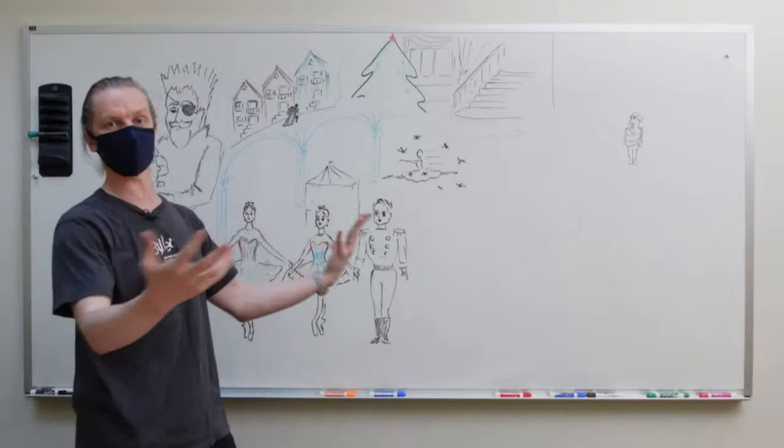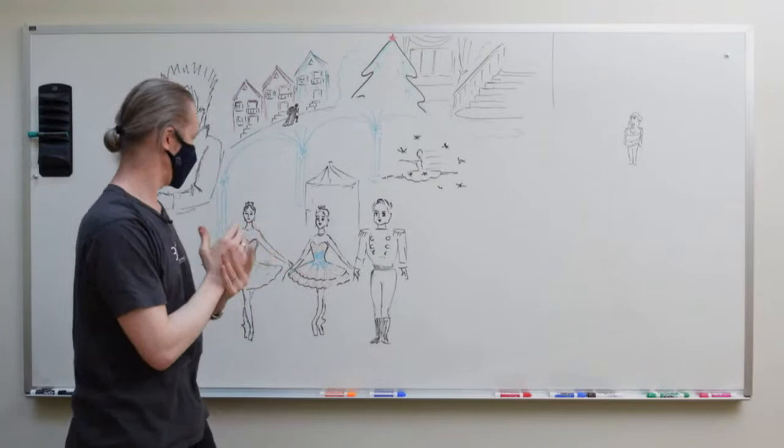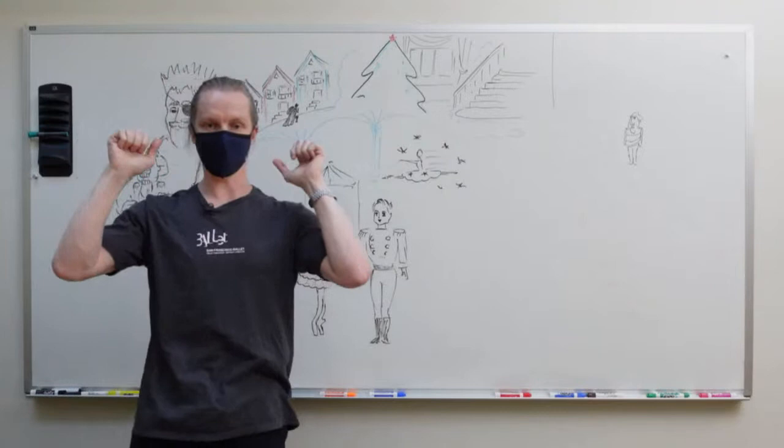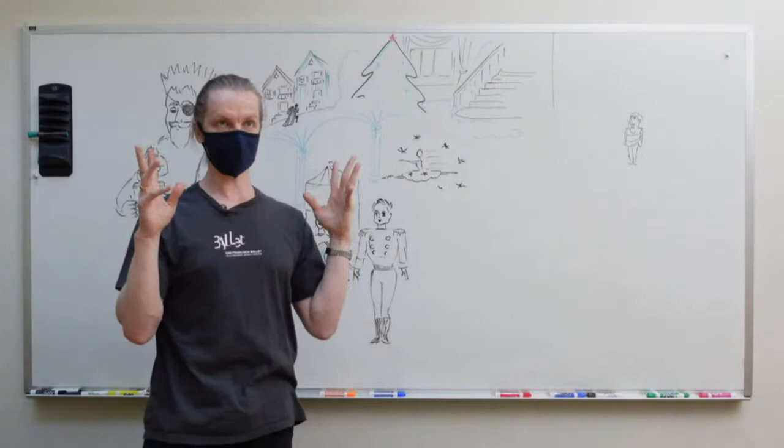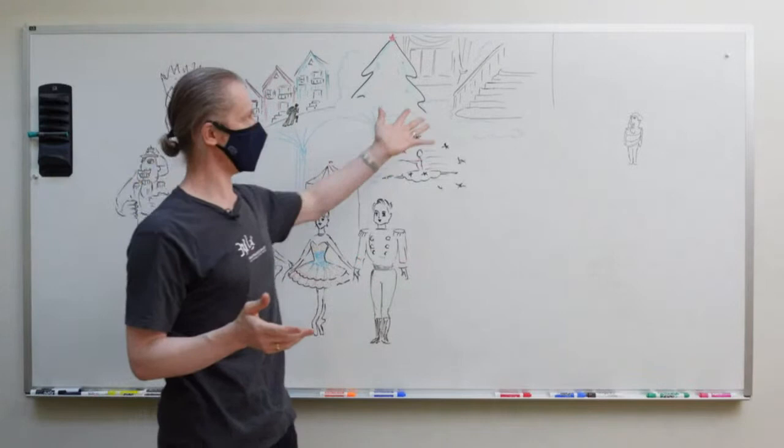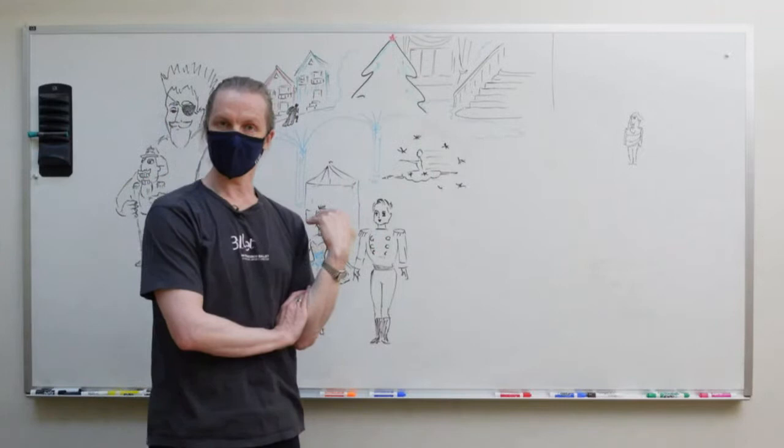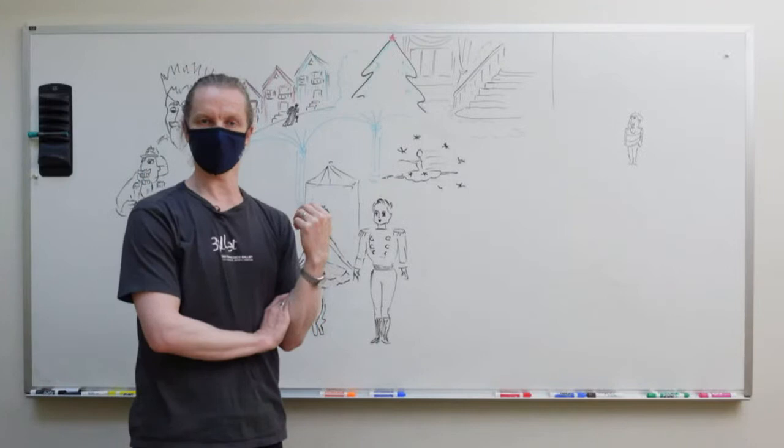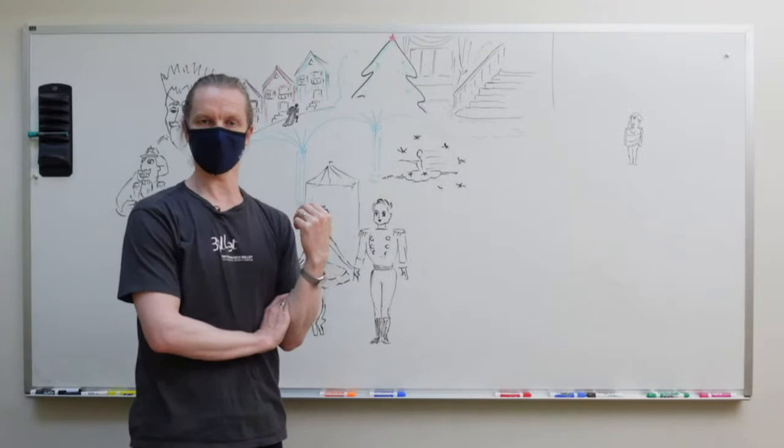The nutcracker prince was really surprised how well Clara danced. They danced and danced. The whole kingdom was dancing around them, turning and jumping and joyously laughing. Clara started feeling dizzy and closed her eyes. When she opened them, she was back in her living room. The nutcracker doll was right next to her. She couldn't believe it - it had all been a really incredible magical dream. Or was it?